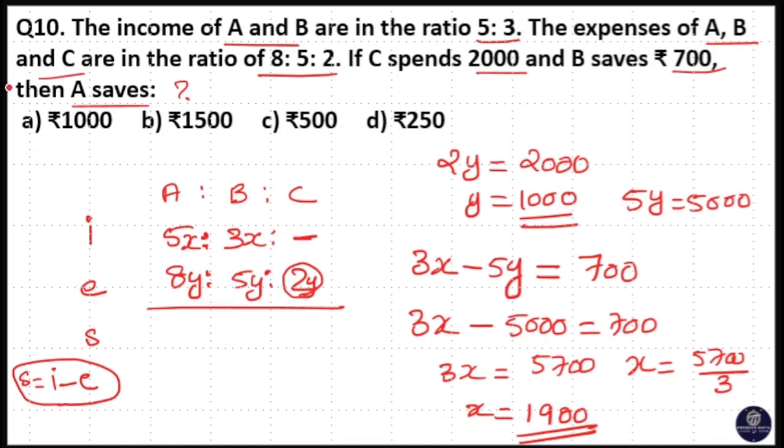That means we have to find savings of A. Savings of A is equal to 5x minus 8y. That means x is equal to 5x. 1000 into 5 is equal to 5000.